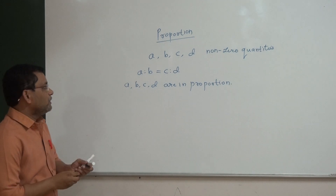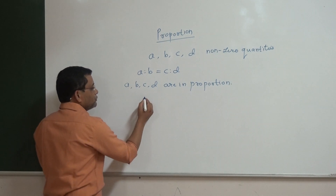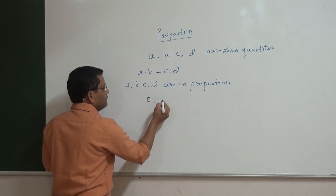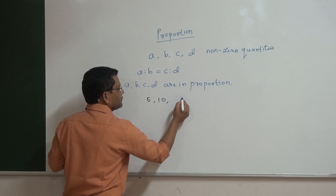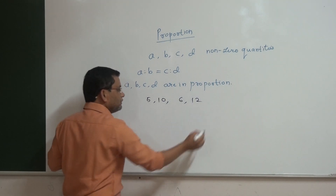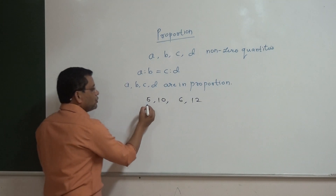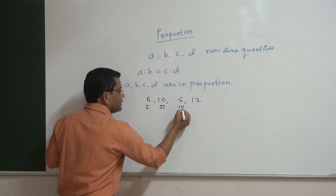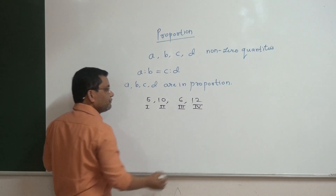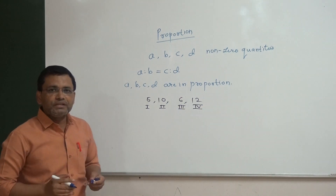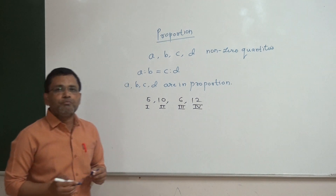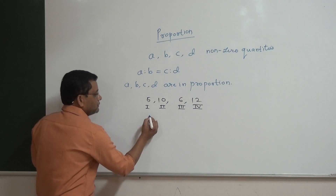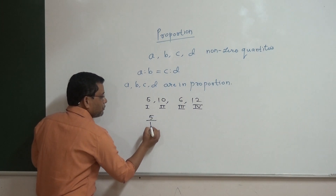Let's understand with an example. Suppose four quantities are given: five, ten, six, twelve. Five is called the first quantity, ten is the second quantity, six is the third quantity, and twelve is the fourth quantity. When can we say that these four numbers are in proportion? We can check by two ways. One is first quantity upon second quantity.